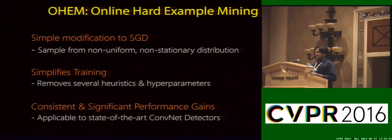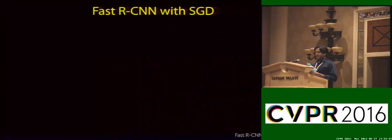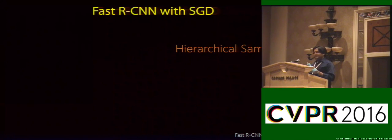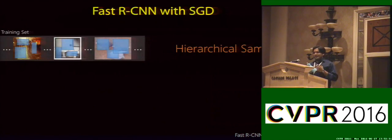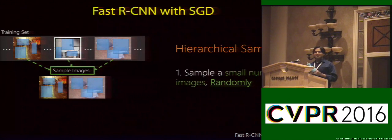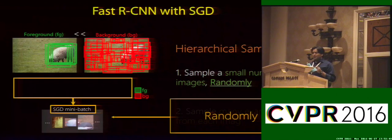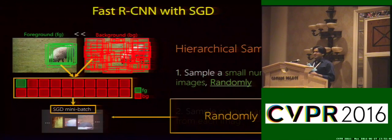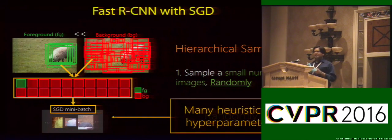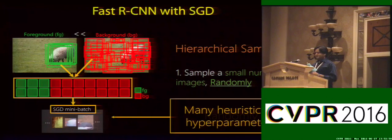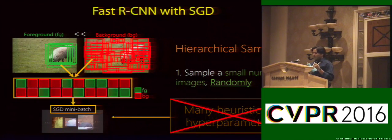Now let's look at how an object detector like Fast-RCNN is trained using SGD. For efficient training, they use hierarchical sampling, where given a training set of images and regions, it first samples a small number of images randomly, and then samples regions from these images to construct a mini-batch. Randomly sampling these regions will lead to a mini-batch with mostly background examples because of the dataset imbalance we discussed. So many heuristics and hyperparameters are used to make nice mini-batches — for example, a fixed ratio to balance foreground and background examples. Our method automatically makes mini-batches without needing any of these heuristics.